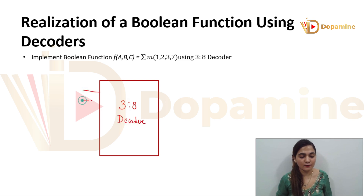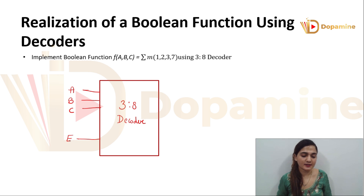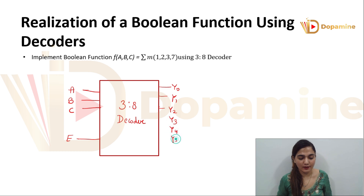In this 3-to-8 decoder we have 3 inputs. So the function is also of 3 variables a, b and c. We have an enable, represented as E, and we are considering the enable is high. So for that we are going to get 8 outputs: y0, y1, y2, y3, y4, y5, y6 and y7.